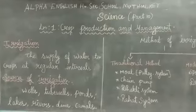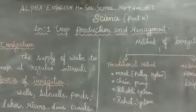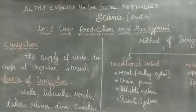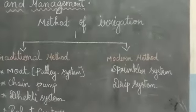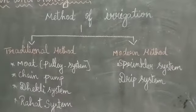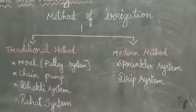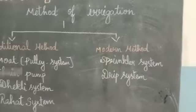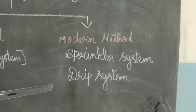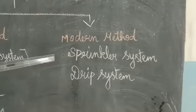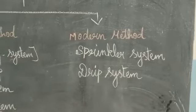In today's class, we learnt about irrigation, sources of irrigation, and methods of irrigation. The two methods of irrigation are traditional method and modern method. Traditional method is classified into four types: mote or pulley system, chain pump system, dhekli system, and rahat system. Modern method is classified into two types: sprinkler system and drip system. In our next class, we will learn about the modern method — sprinkler system and drip system. Thank you.